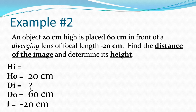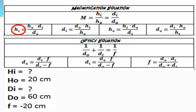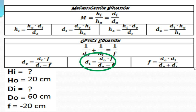We're looking for the distance of the image and the height of the image. I'll start by finding the distance of the image using the optics formula, rather than the magnification formula, because I don't have the height of the image yet. If I relied on a calculated value for hi and made a mistake, I'd also get the wrong di. It's better to use given information you can trust.